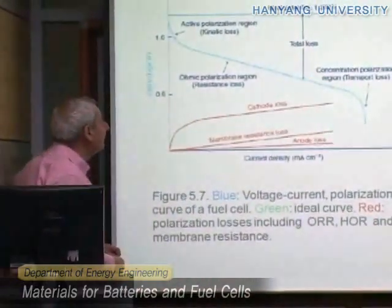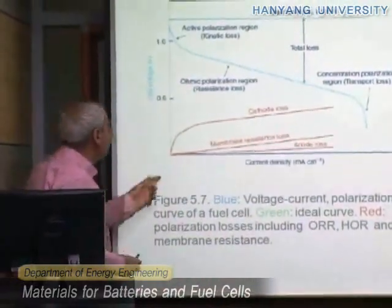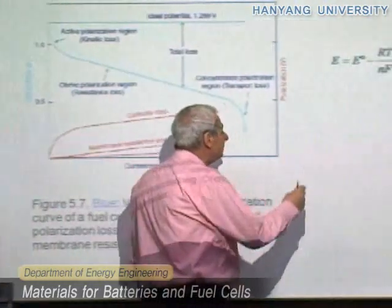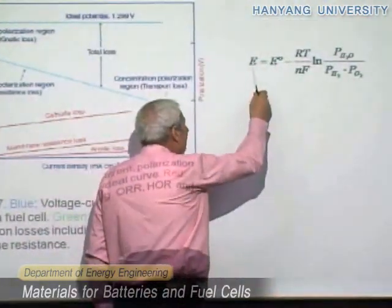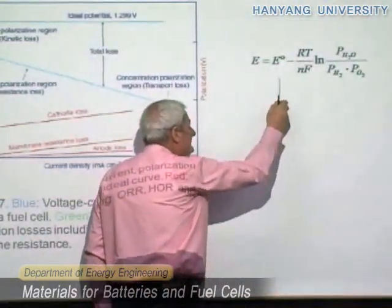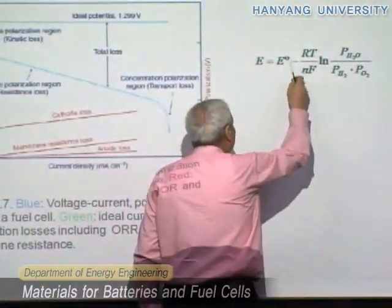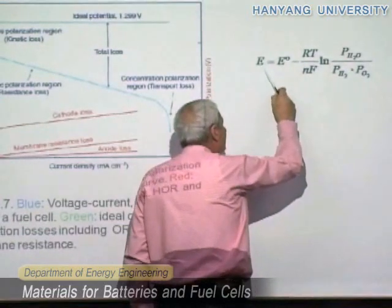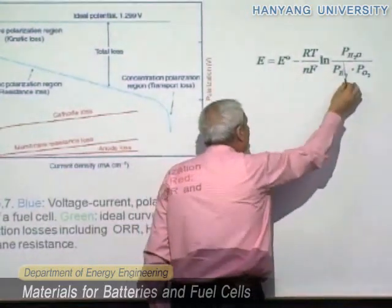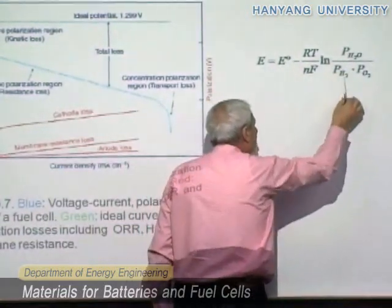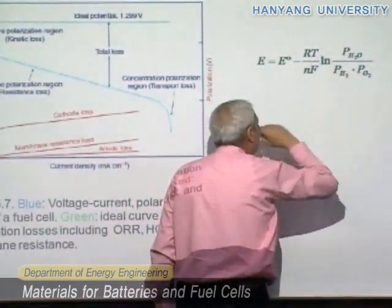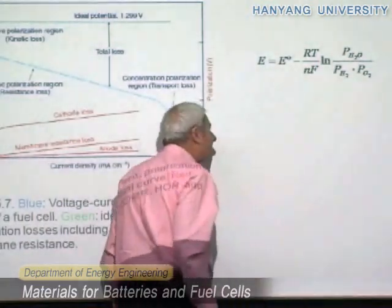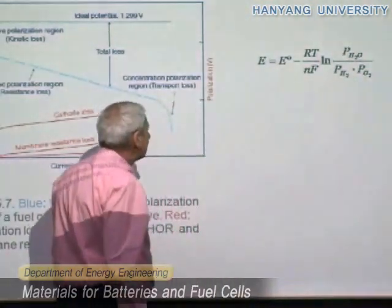It's 1.23 volts. And this voltage is given by the following equation, and is 1.23 V in ideal conditions when the partial pressures are one.